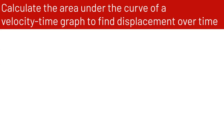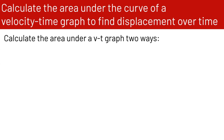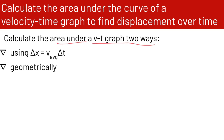Let's talk about calculating the area under the curve of a velocity-time graph to find displacement over time. We can calculate the area under a velocity-time graph in two ways: mathematically using delta x equals average velocity times delta t, or geometrically. We're going to look at both ways.